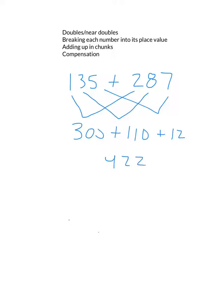Now if you want to add up in chunks, adding up in chunks is you take the largest number and then you just start adding up in chunks. So what's 287 plus 5 would give us 292. 292 plus 30 would be 322. What's 322 plus 100? 422. So again, that's adding up in chunks.